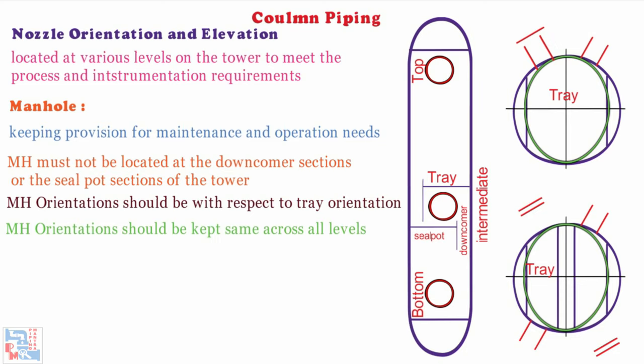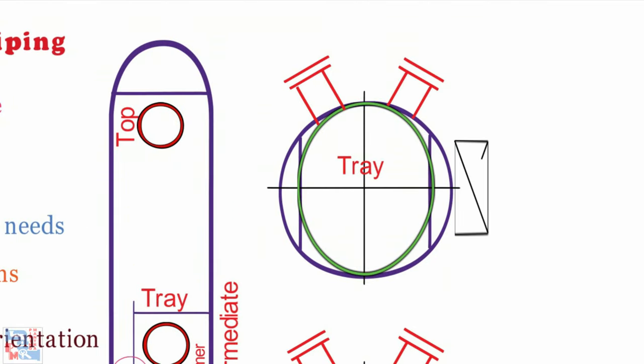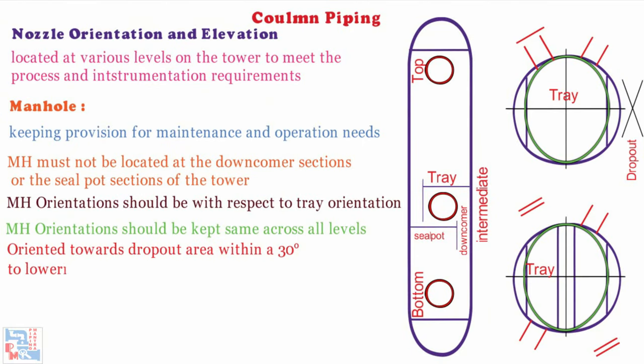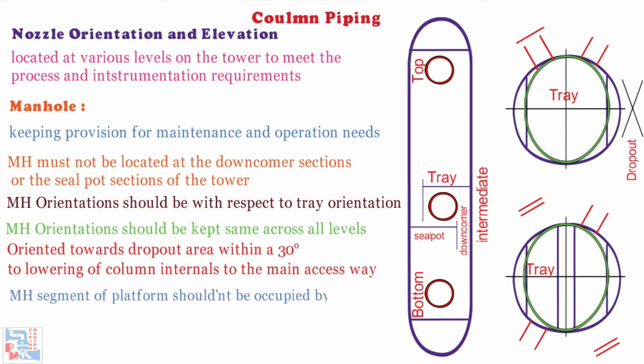Normally manholes shall be oriented towards drop out area within a 30 degree segment of column as this facilitates the lowering of column internals to the main accessway. The manhole segment of platform should not be occupied by any piping.